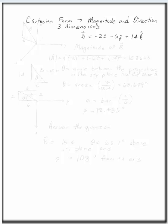Change vector b = -2i - 6j + 14k in Cartesian form into magnitude and direction. Now this is a three-dimensional problem. The first thing you really want to do is sort of sketch yourself a little picture of what it is you're talking about.